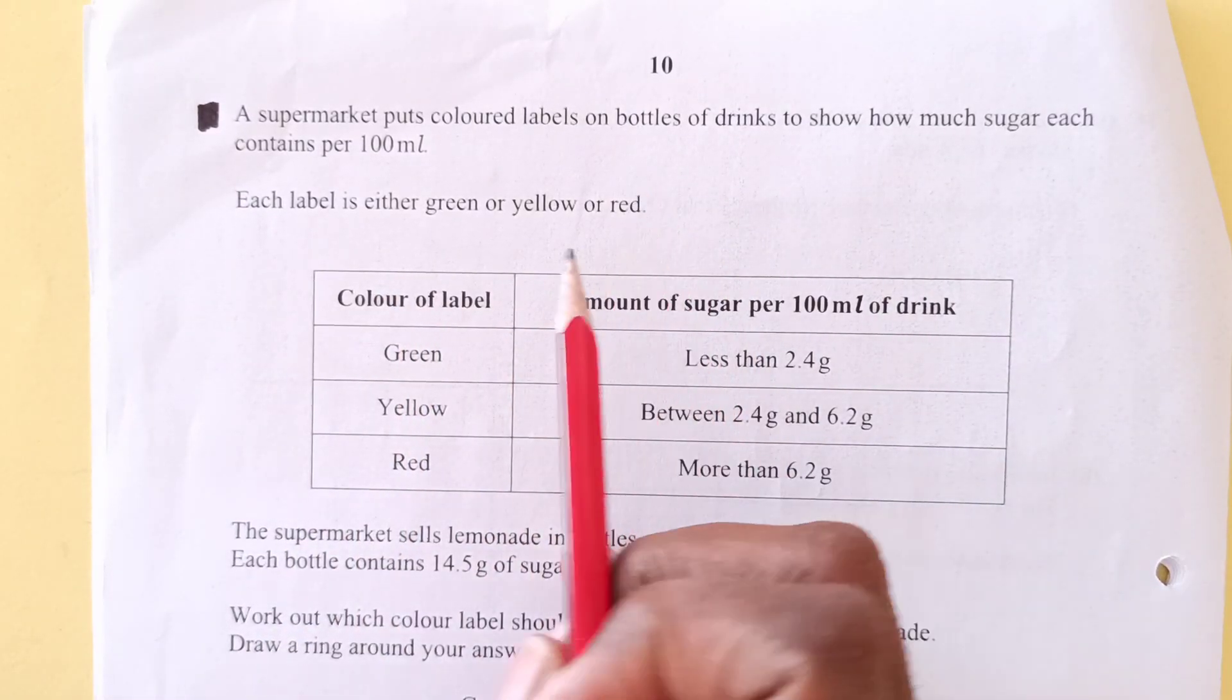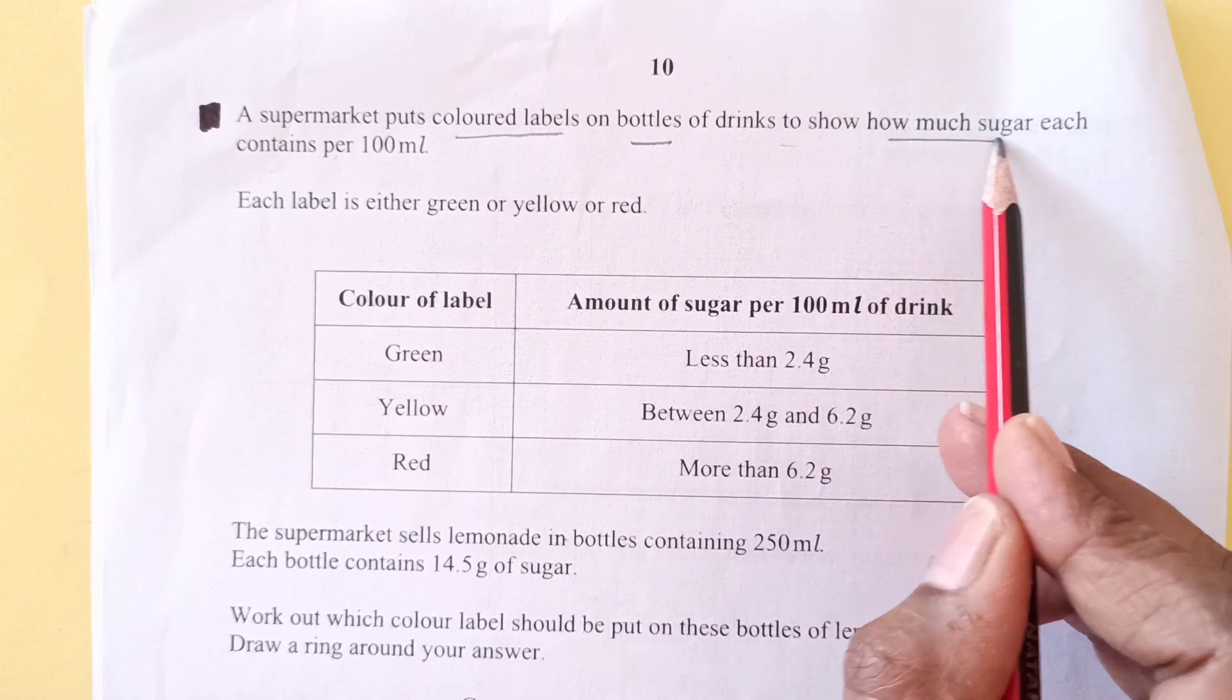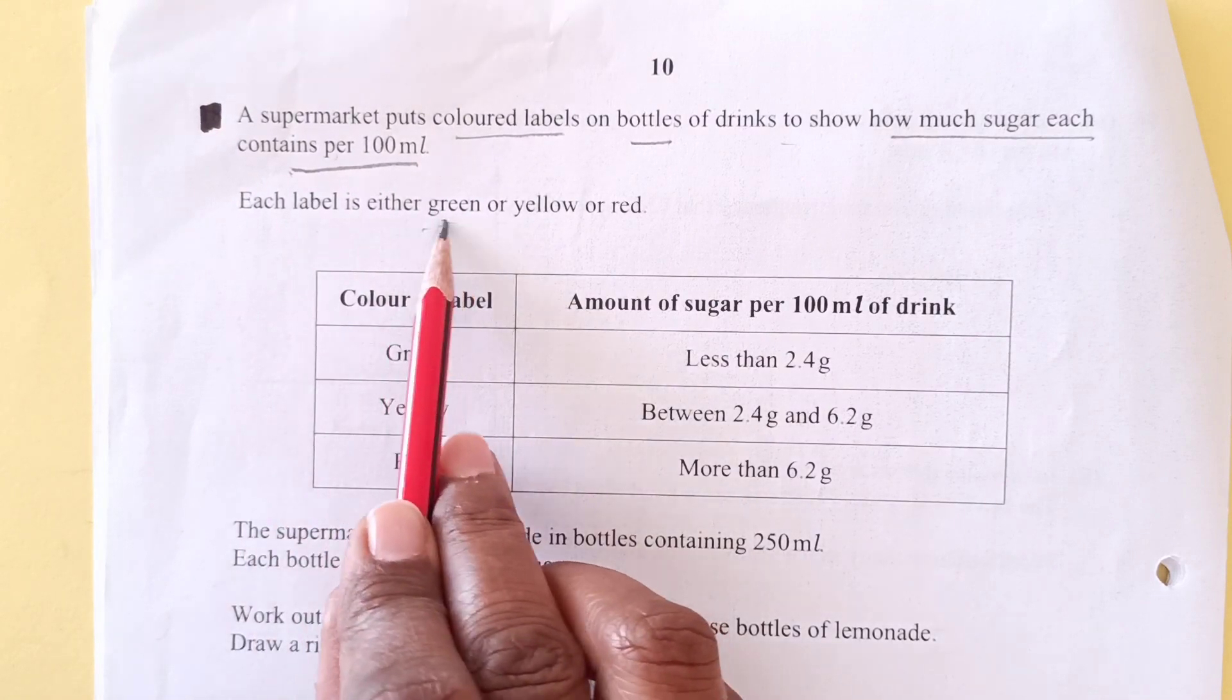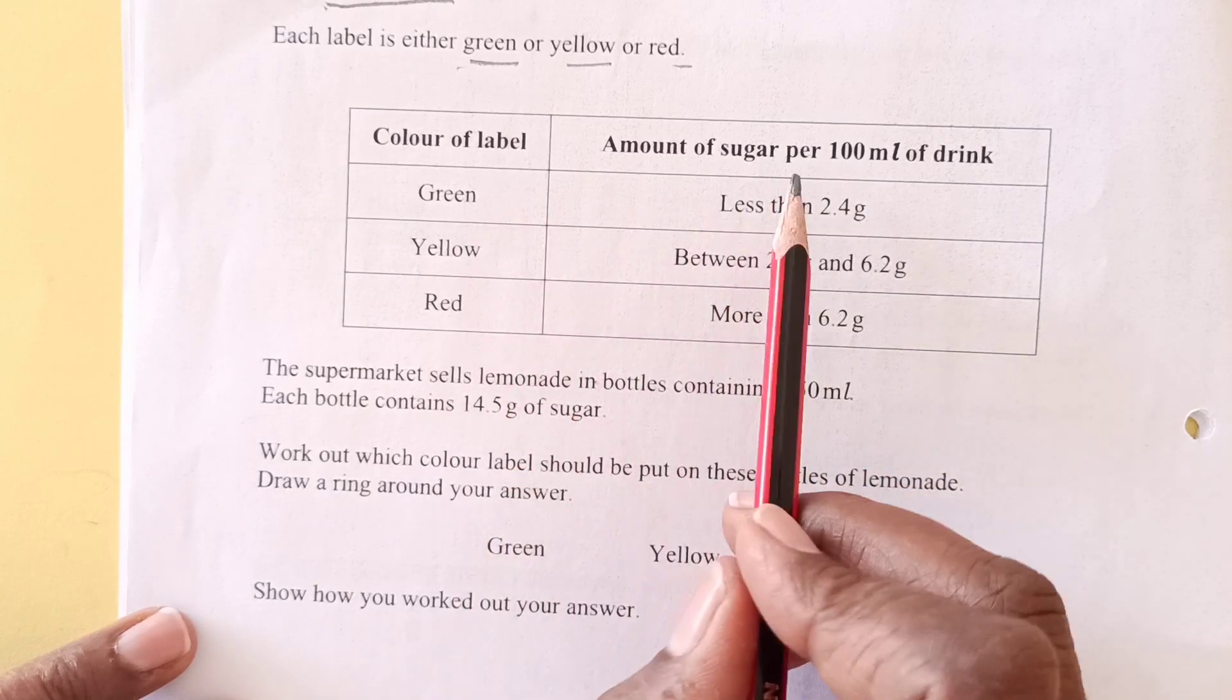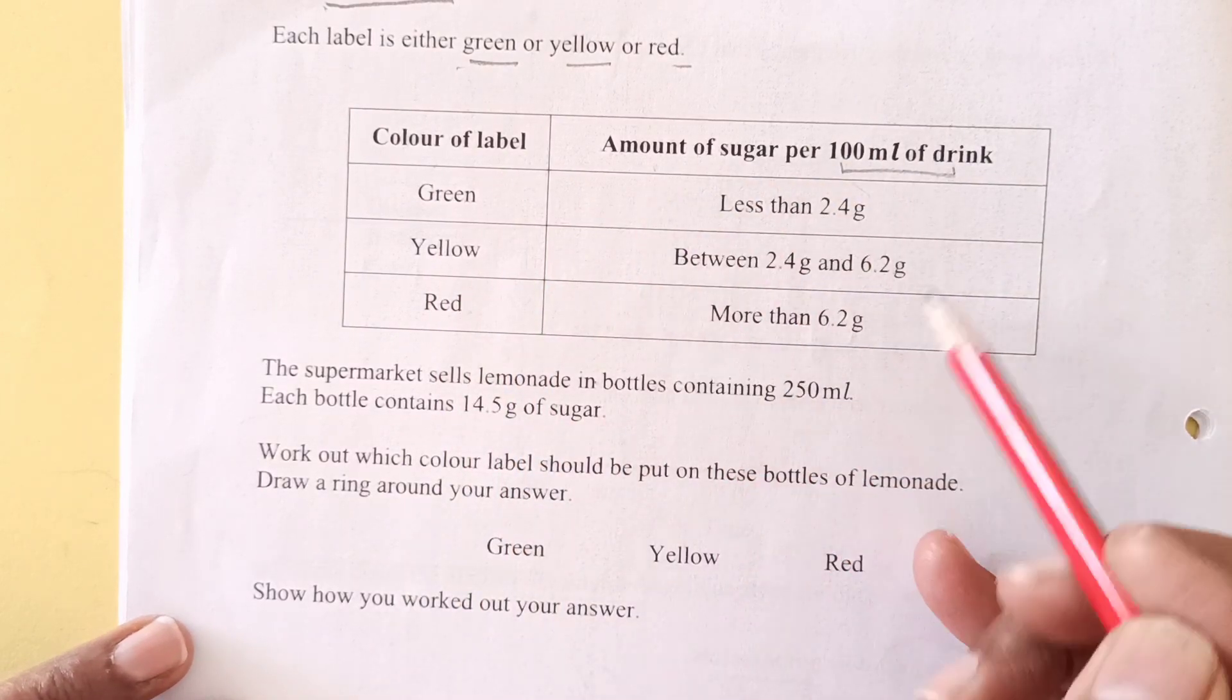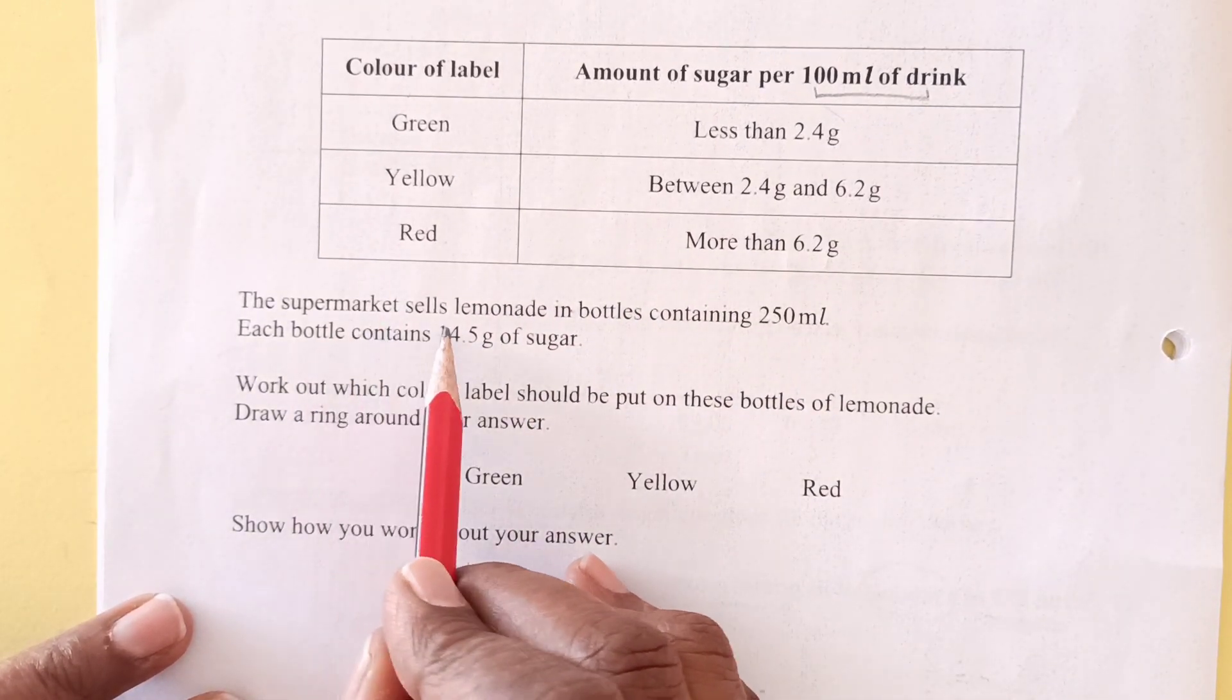Okay, so another tricky question here. A supermarket puts colored labels on bottles of drink to show how much sugar each contain per 100 milliliters. Each label is either green, yellow, or red. So here is the content of the sugar given to us: amount of sugar per 100 ml, color green, yellow, red. So it depends how much sugar a certain drink contains, that's how they put green, yellow, and red labels.